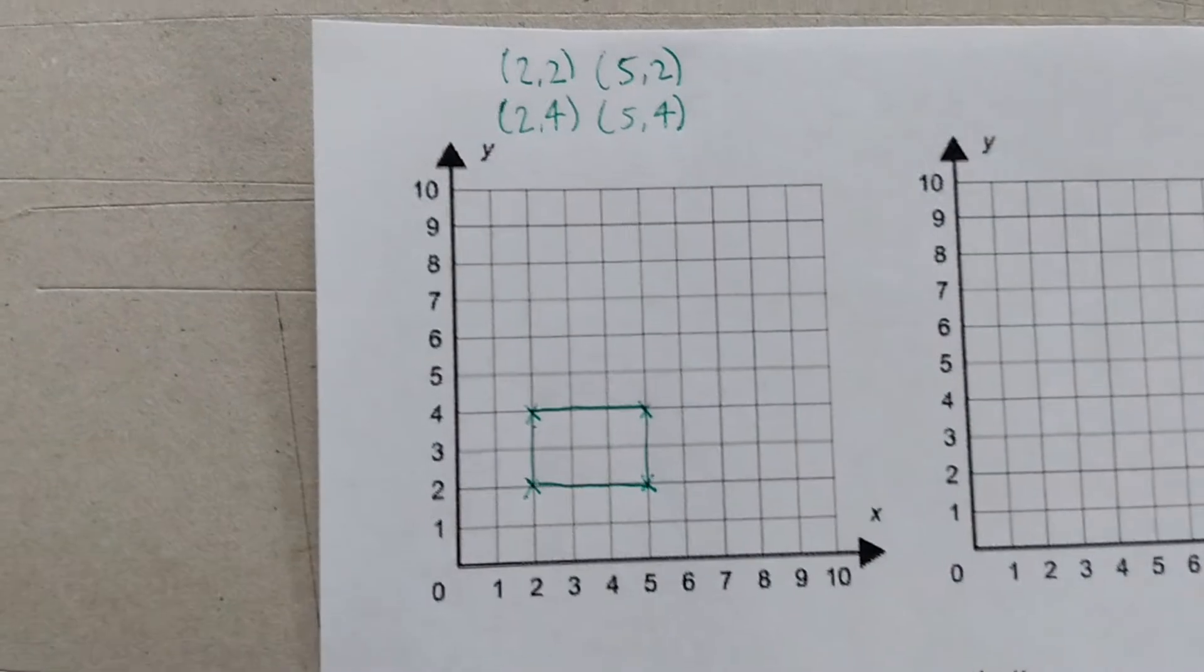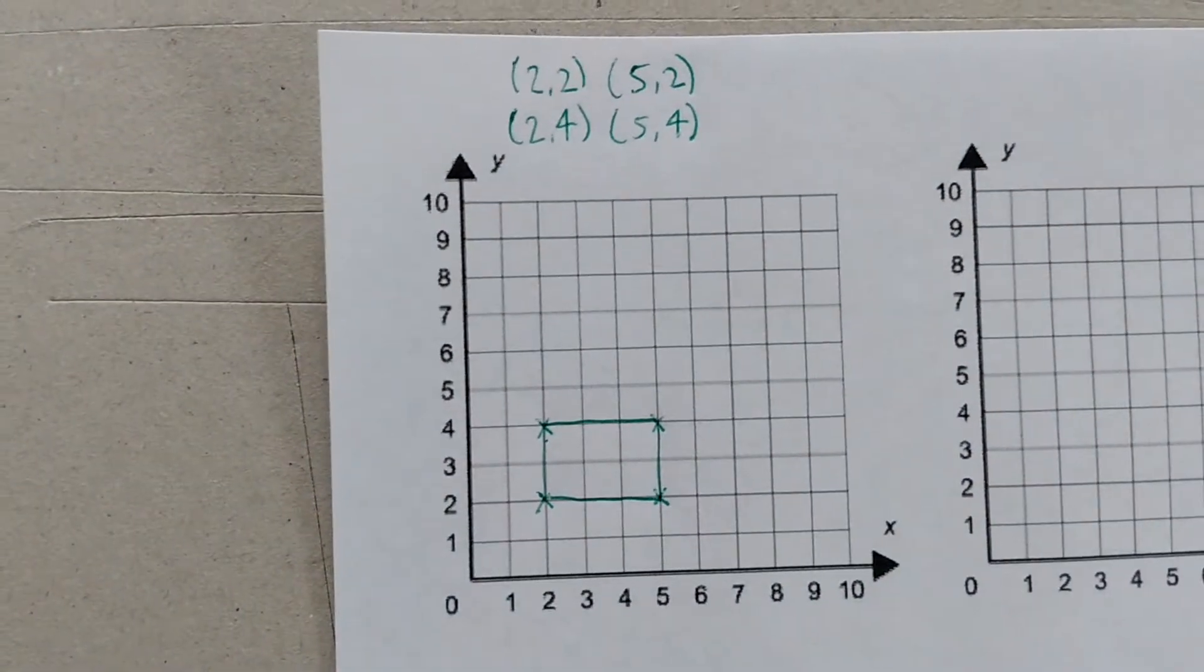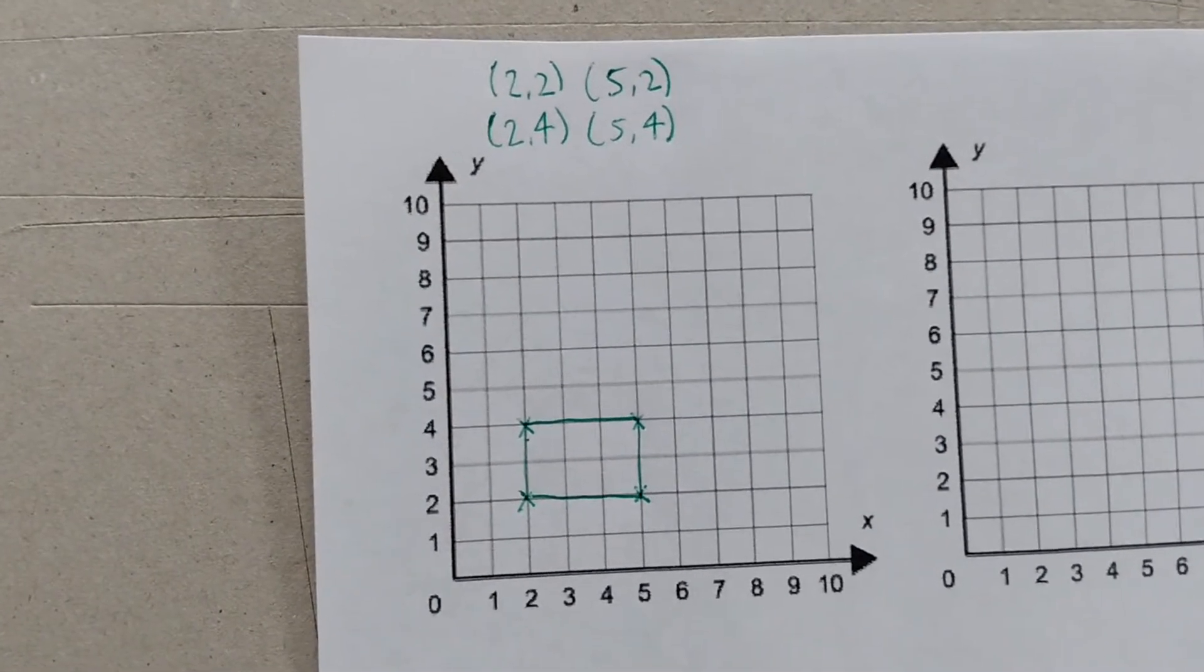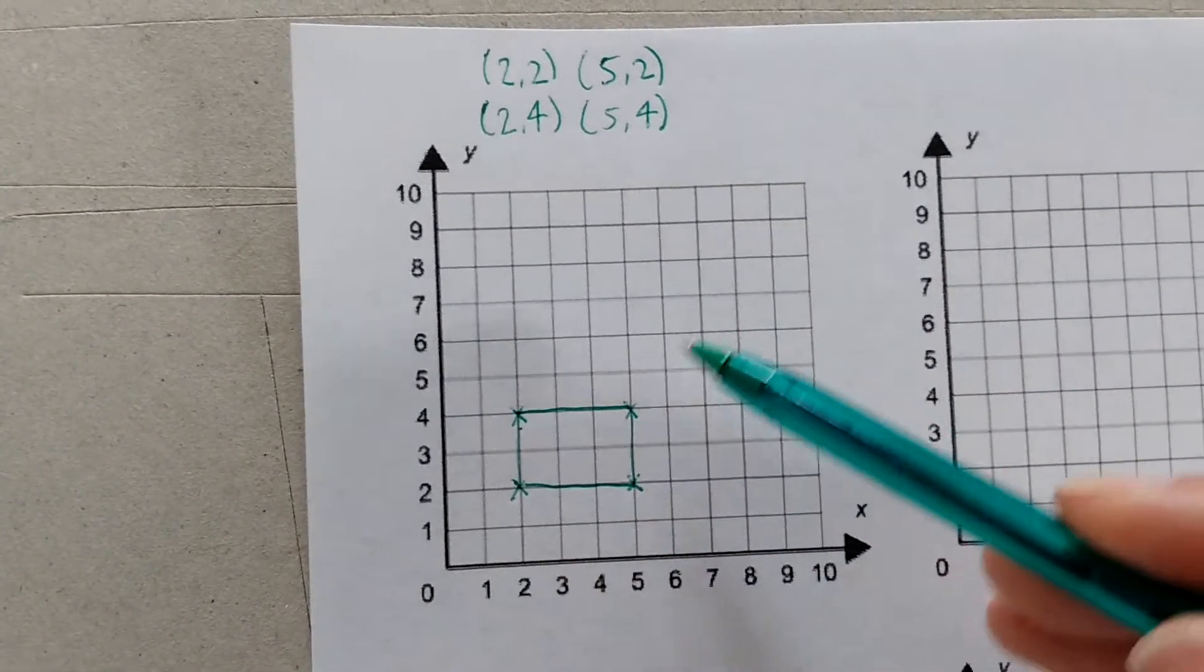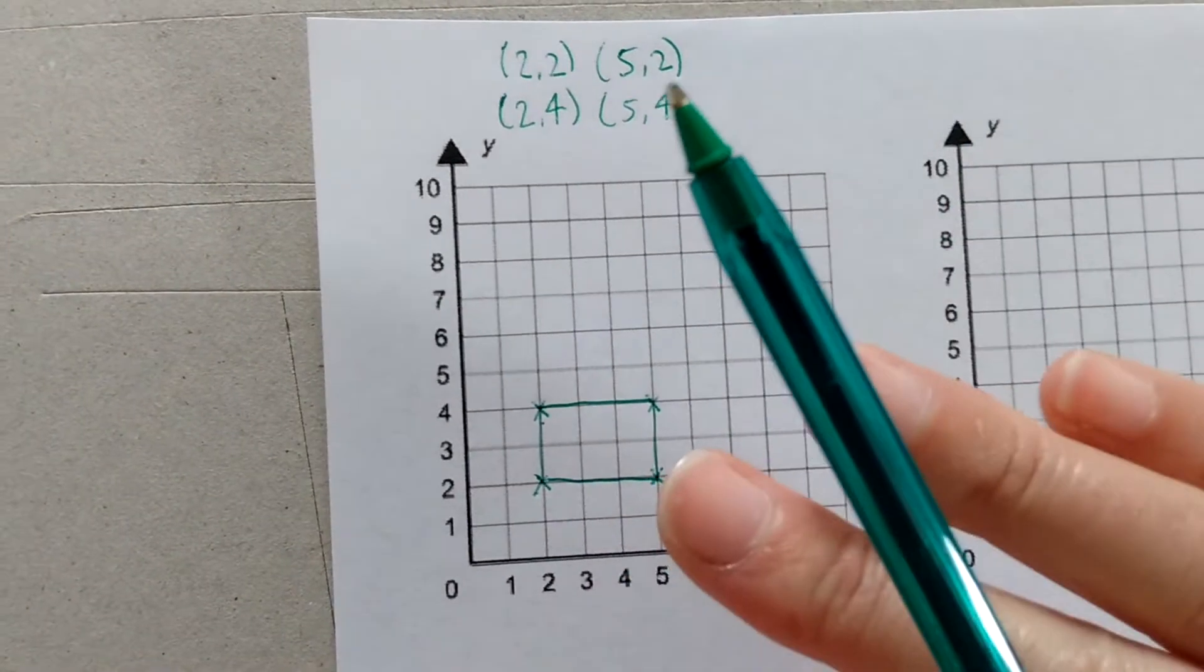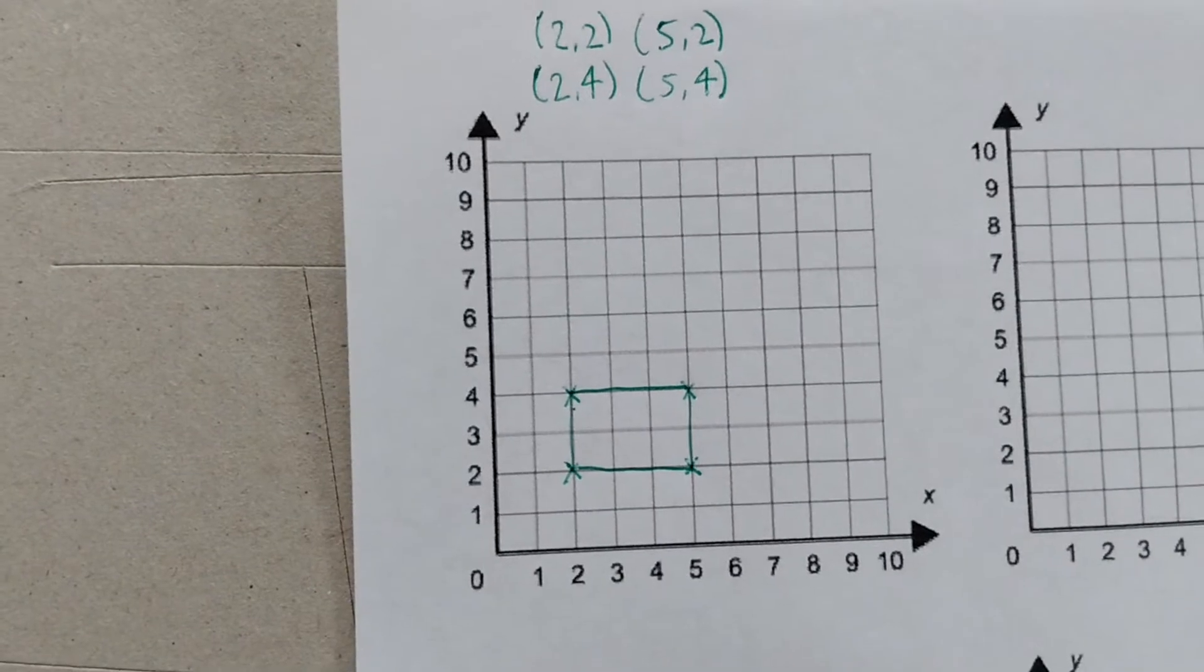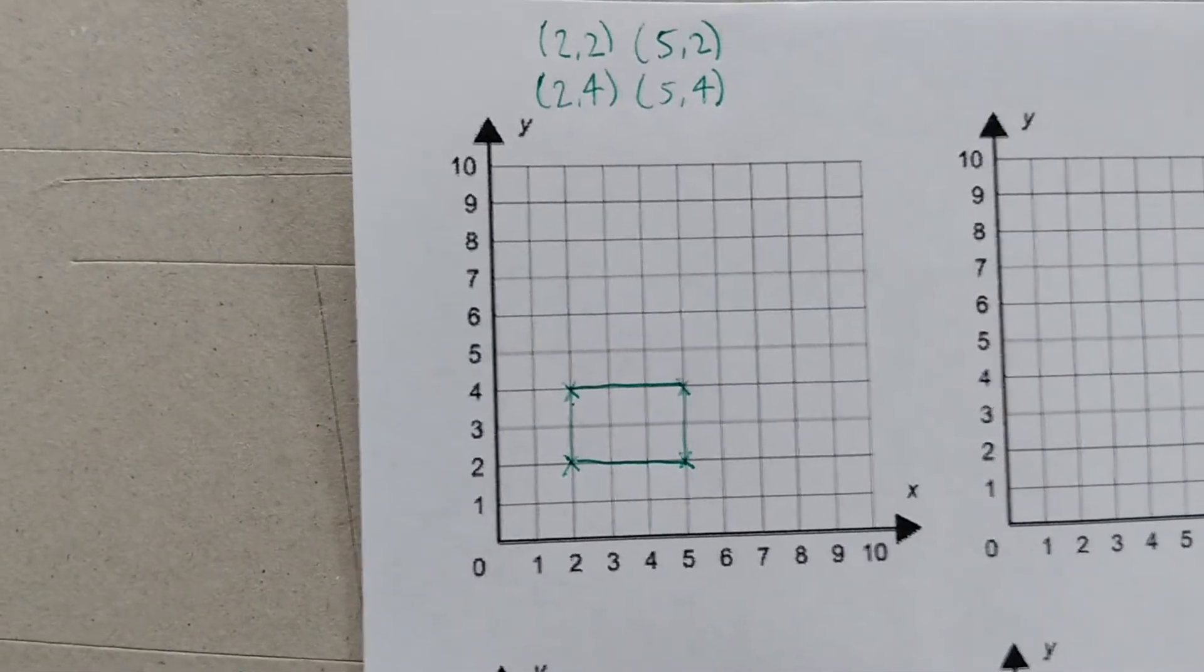So far it's just what we've been learning all this week, how to plot coordinates and how to join them to make shapes, polygons. Now translation is when you move a shape to somewhere else in your grid without twisting it, without flipping it over, without doing anything fancy to it, just moving it from one place to the other and you use coordinates to instruct your move.